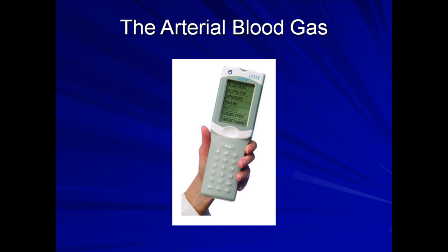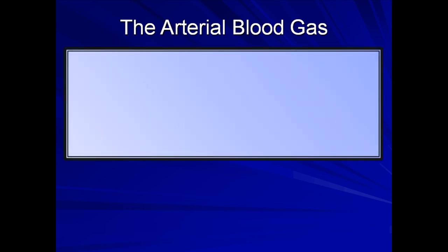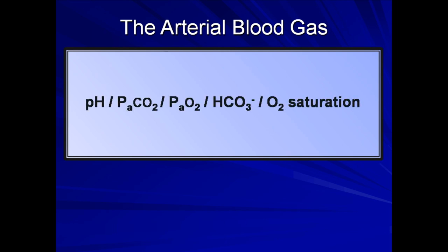Depending upon the exact model of analyzer and the type of cartridge used, the ABG can provide an array of various measurements. However, the three values usually of greatest interest are the arterial pH, the PaO2 or arterial oxygen tension, and the PaCO2 or arterial carbon dioxide tension. In addition to these three, all ABGs also report the serum bicarbonate level as well as the arterial O2 saturation.